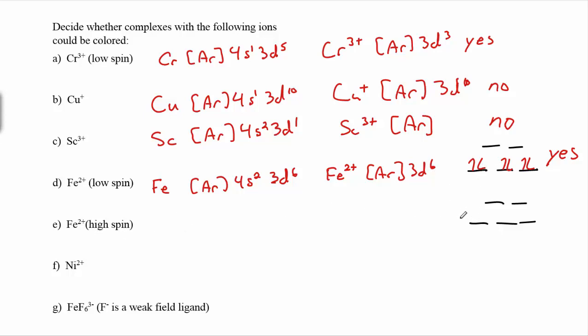For the high spin case of Fe²⁺ (d6), the electrons fill in differently, but even so we're not d0 or d10. We still have some electrons in the lower set and a couple of empty spots in the upper set, so yes, we still expect them to be colored.